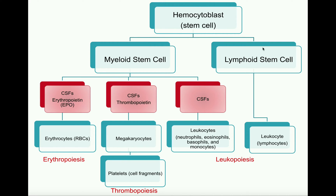There's another lineage called the lymphoid lineage. Certain colony stimulating factors cause the hemocytoblast to differentiate into a lymphoid stem cell. The major product of the lymphoid lineage is the leukocyte called a lymphocyte. Note that leukocyte is the general term for all white blood cells, but a lymphocyte is a specific type of leukocyte. Other factors we'll discuss when covering the immune system will trigger lymphocytes to differentiate further into T cells, natural killer cells, or B cells. The process of forming white blood cells from either the myeloid or lymphoid lineage is called leukopoiesis.